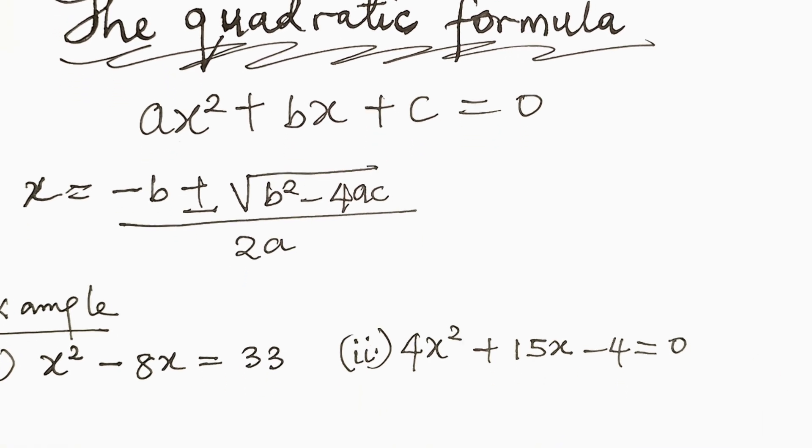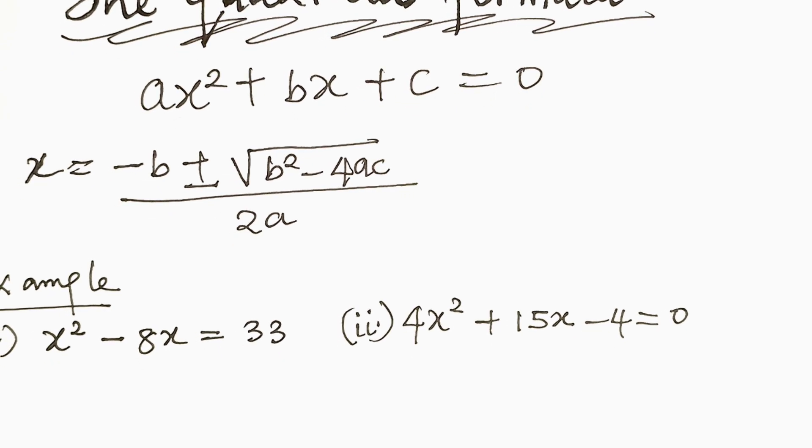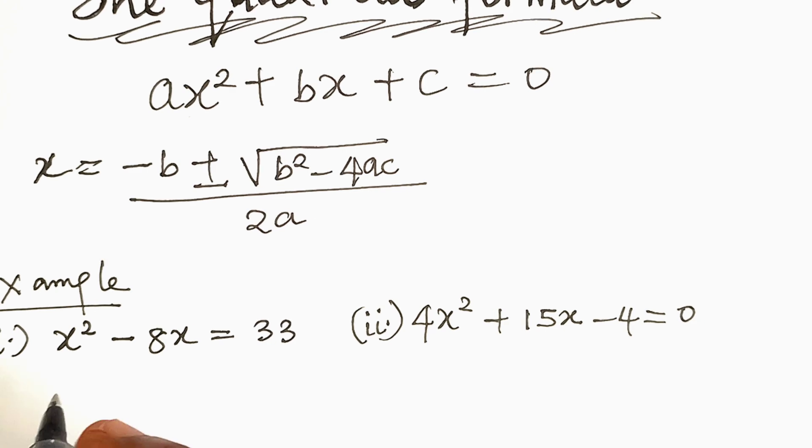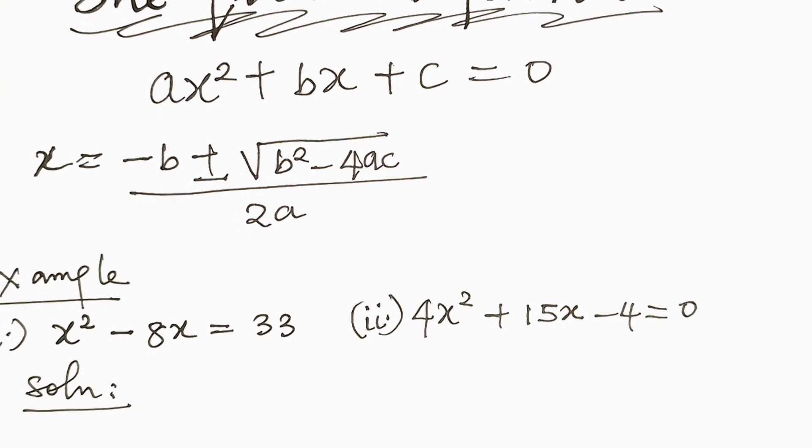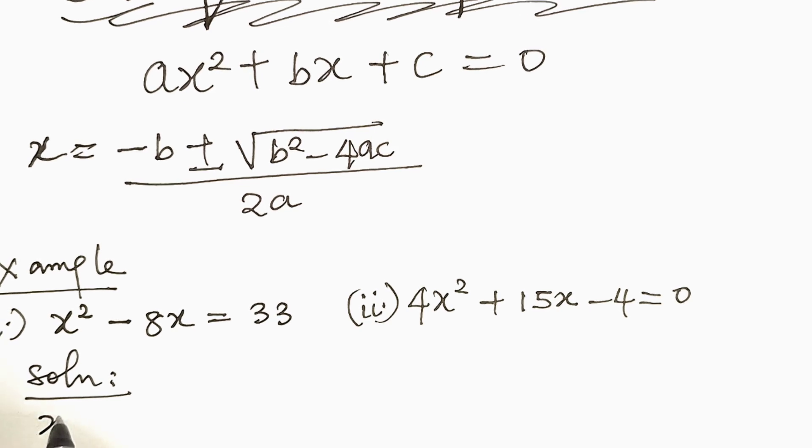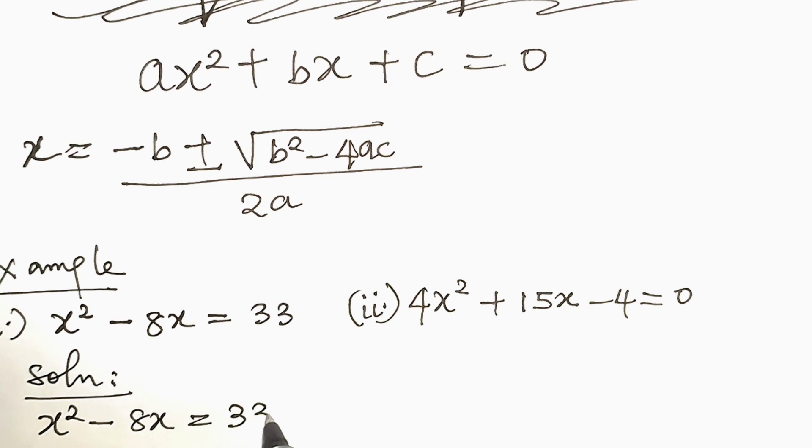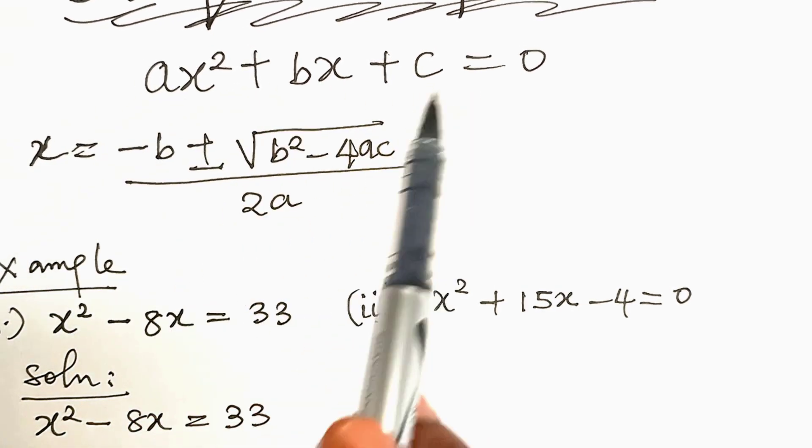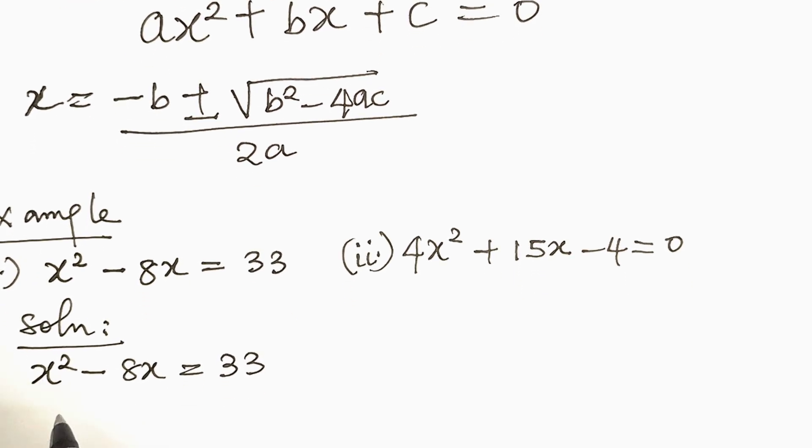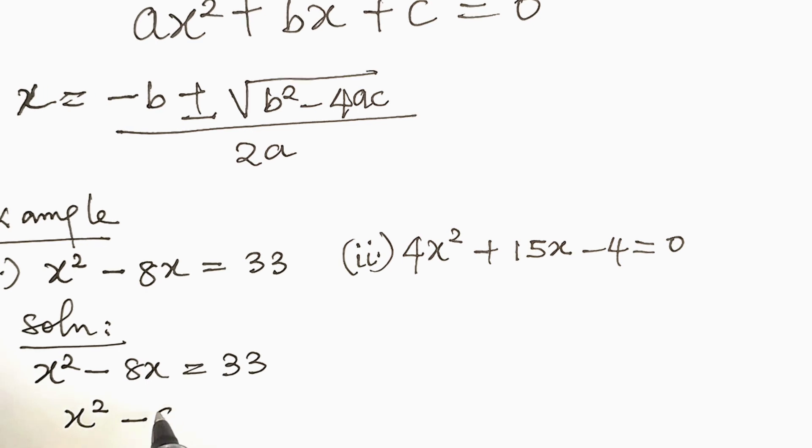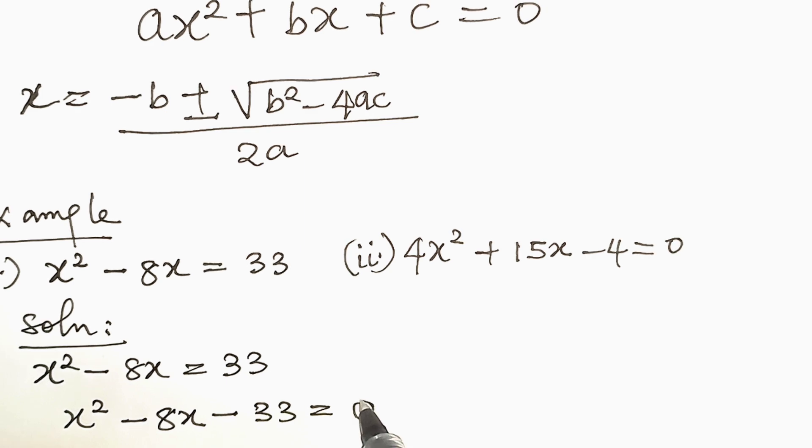So, we will apply the quadratic formula to these equations. Now, let's start with the first one. Solution. The first equation is x squared minus 8x equal to 33. Now, we have to put it in this form. This will be x squared minus 8x minus 33 equal to 0.